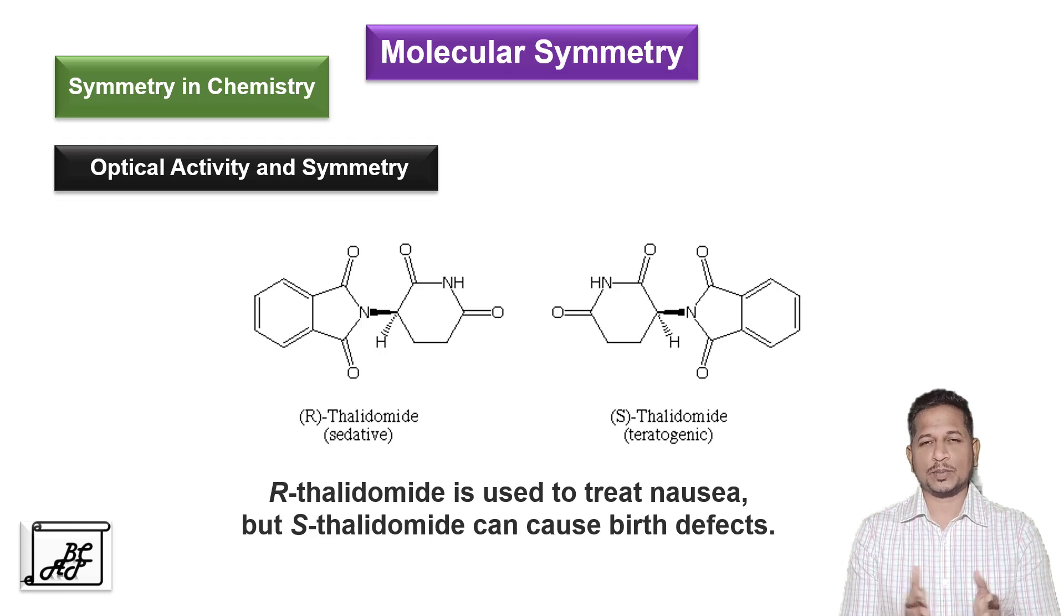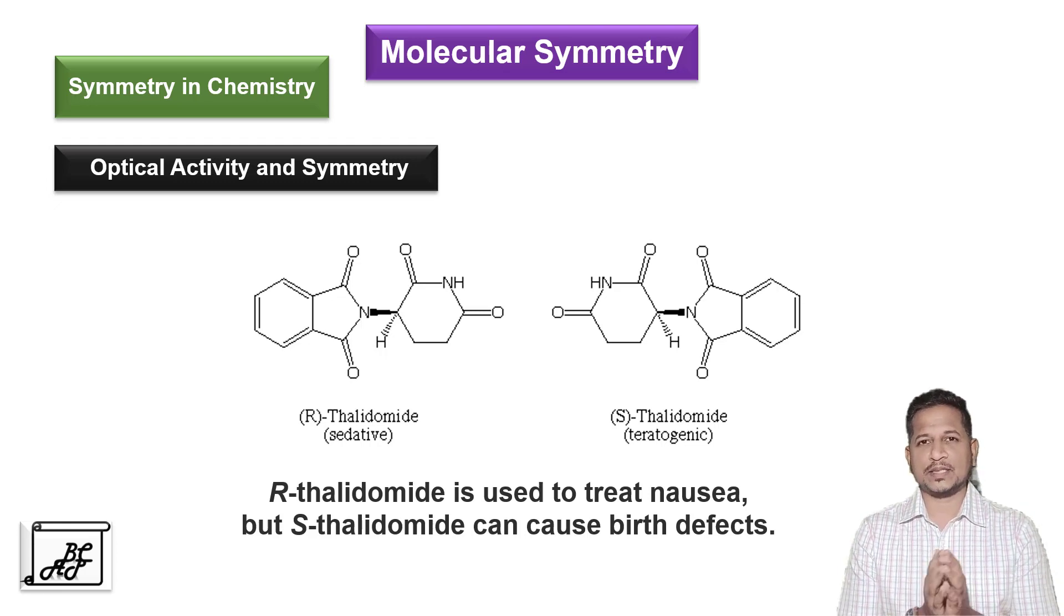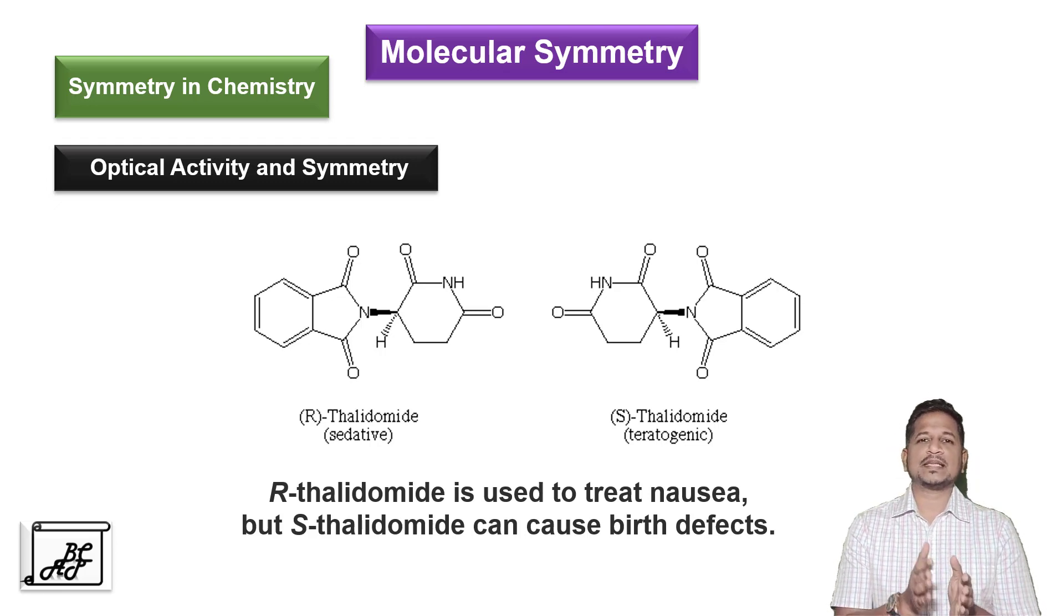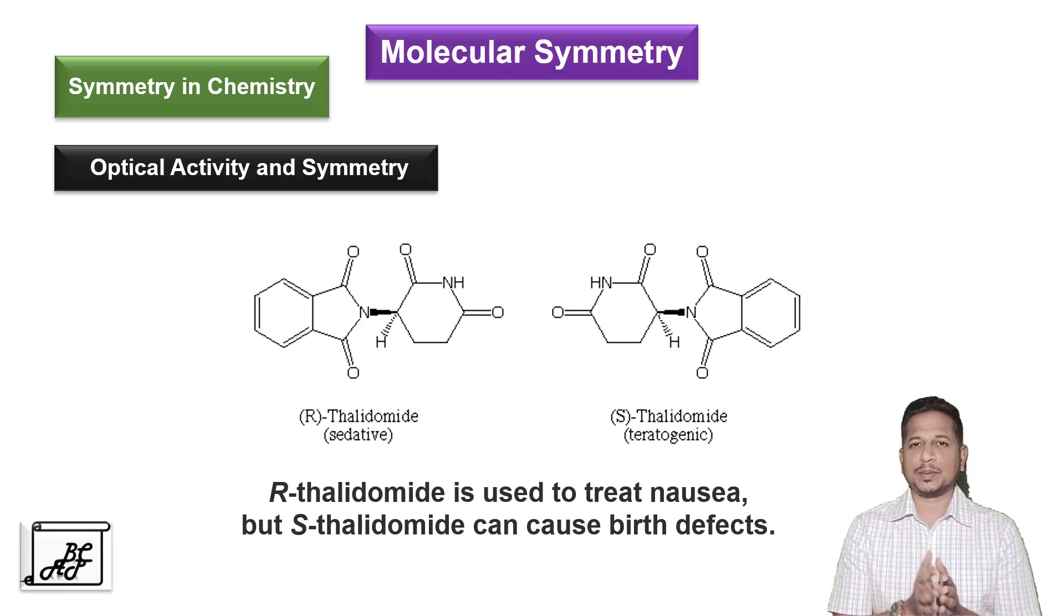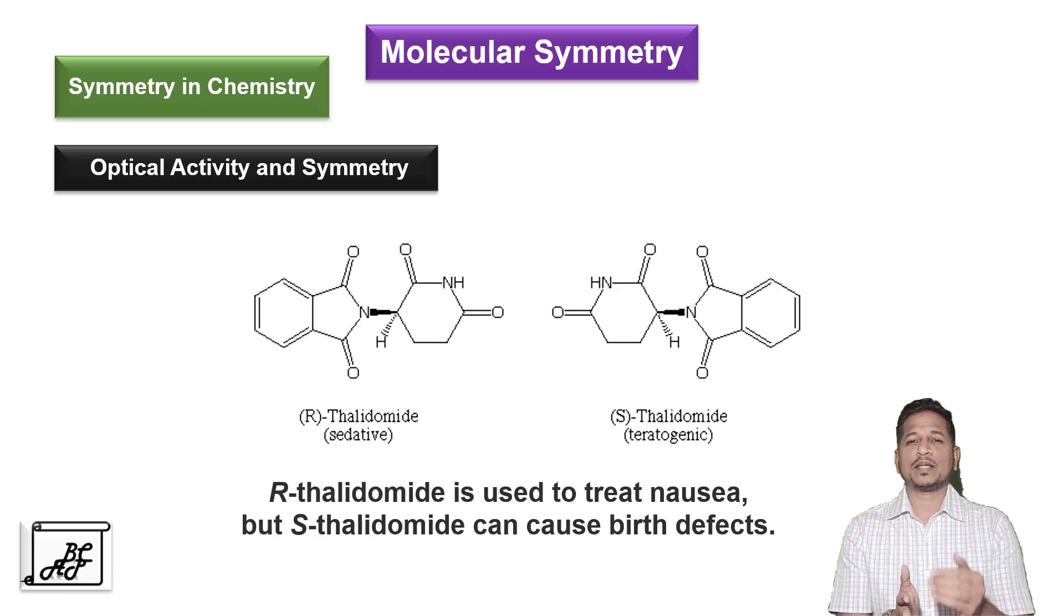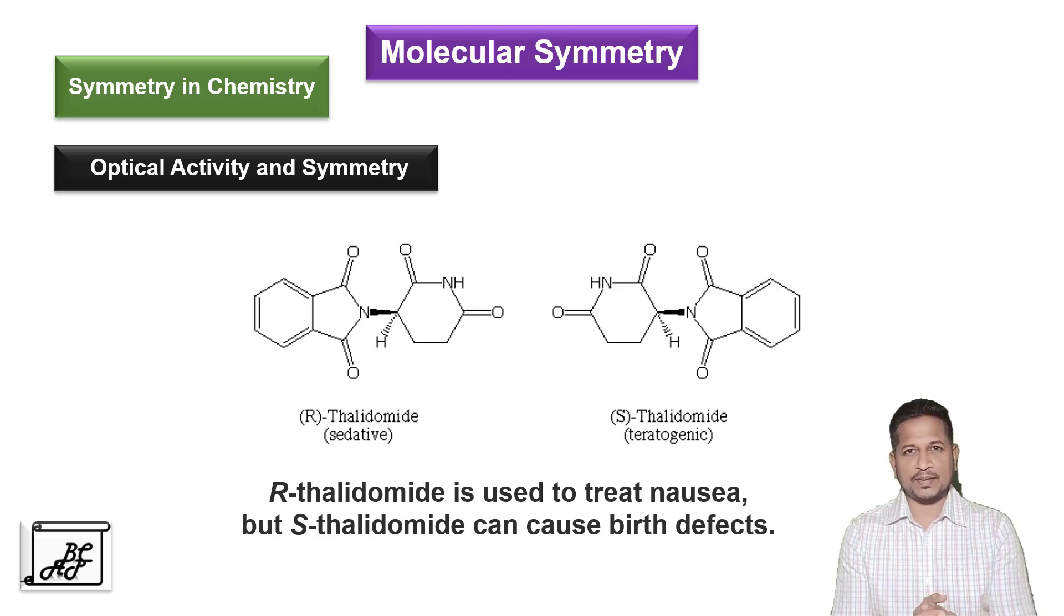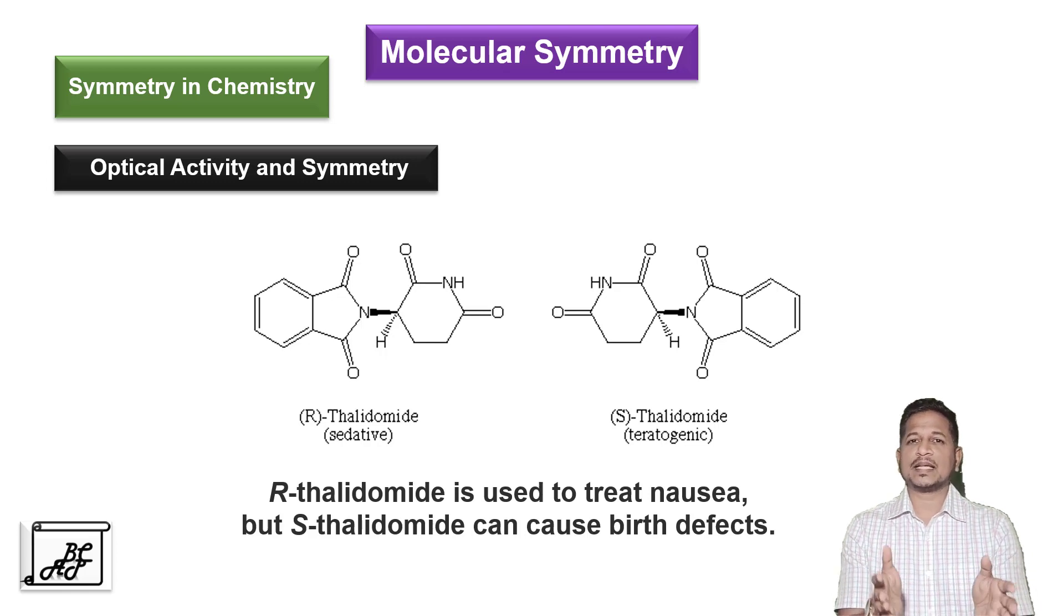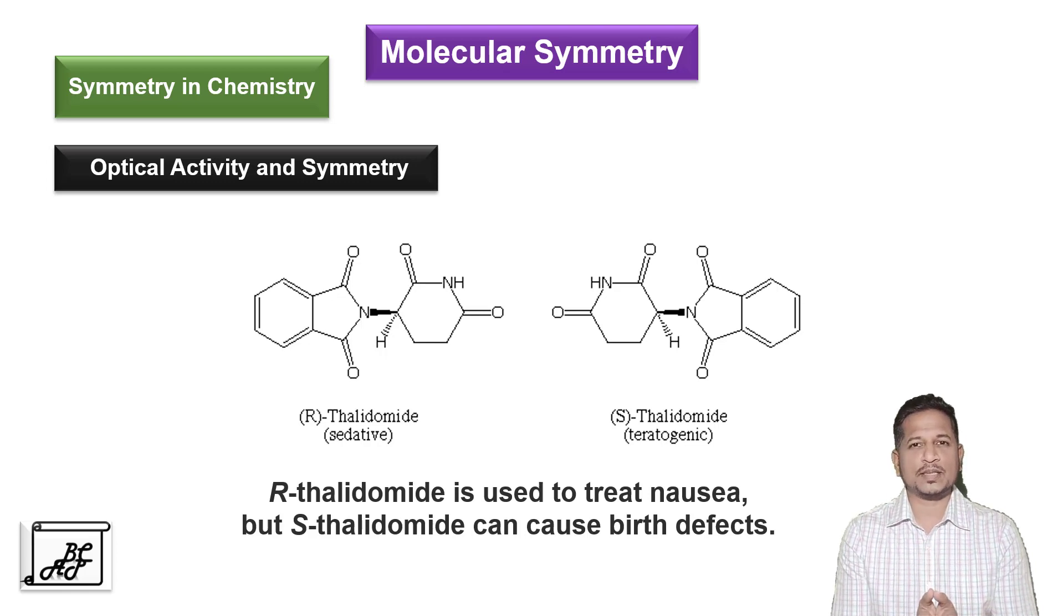Thalidomide has two isomers, R isomer and S isomer. R thalidomide is used to treat nausea whereas S thalidomide can cause serious birth defects. Therefore, it is very important to study optical activity whether the molecule is R type or S type and this can be studied with the help of molecular symmetry.